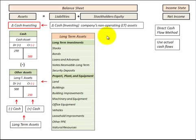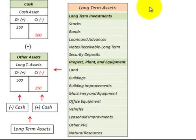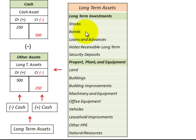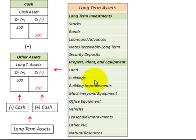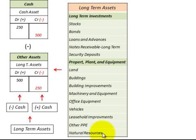Typical long-term assets include long-term investments in stocks and bonds — investments in other company stocks and bonds held as a long-term asset — as well as loan advances, long-term notes receivable, and security deposits. For property, plant, and equipment, it could include land, buildings, building improvements, machinery and equipment, office equipment, vehicles, leasehold improvements, other property, plant, and equipment, and natural resources.